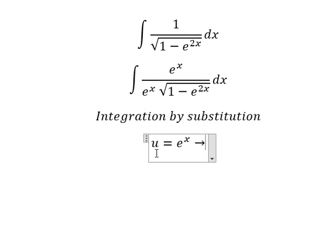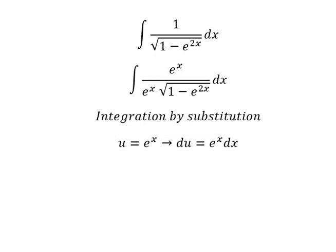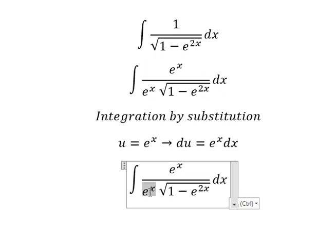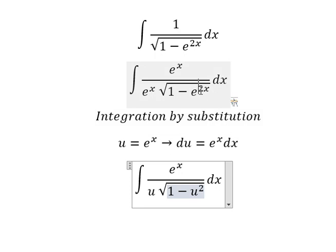We need to do the first derivative for both sides, and we have du equals e to the power of s dx. Next, this term we change to u, and this term we change to u squared, because we have the number 2 here. And e to the power of s dx we change to du.